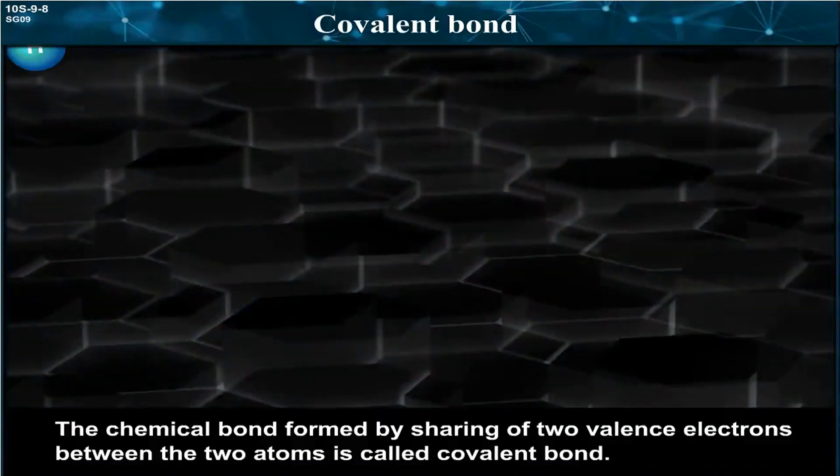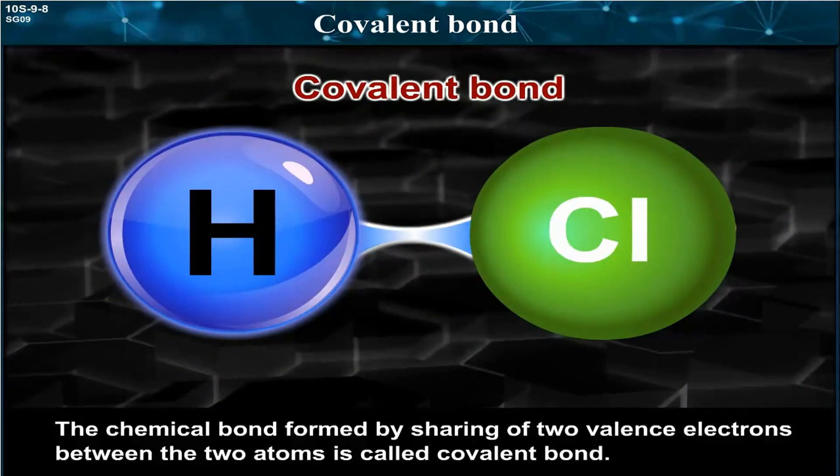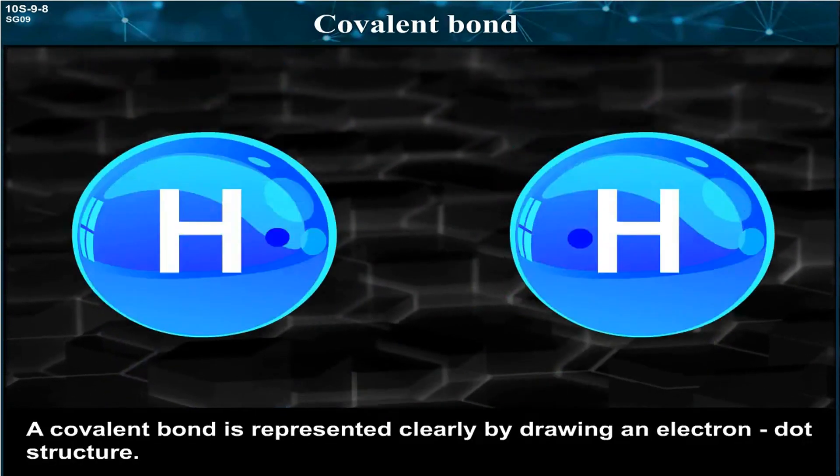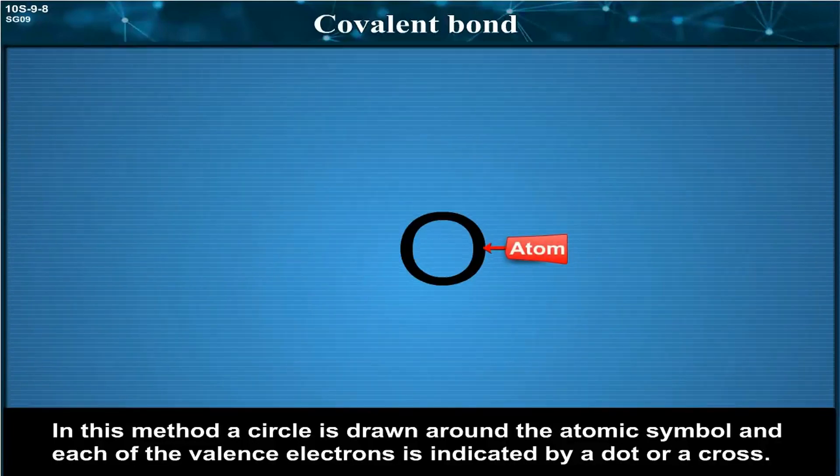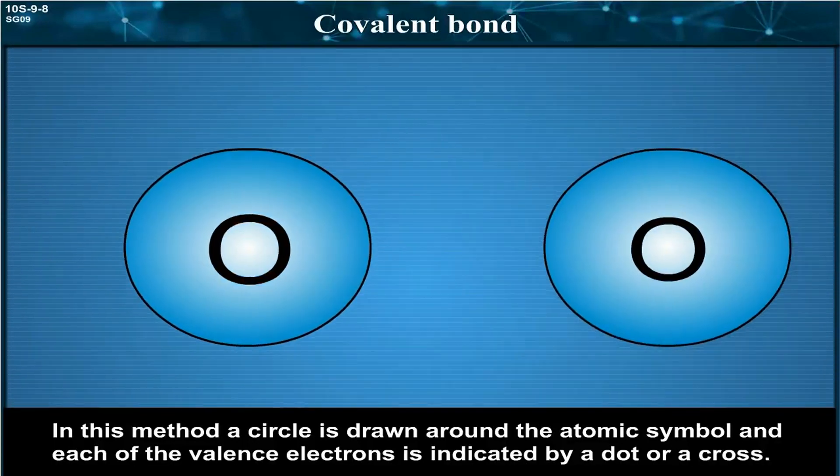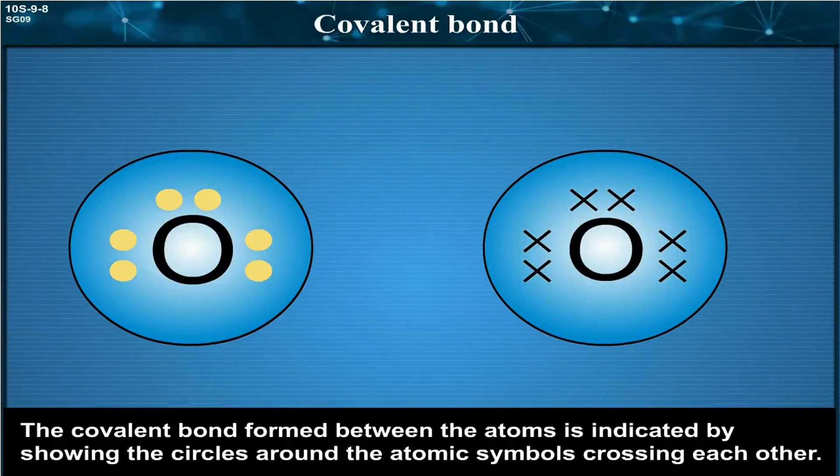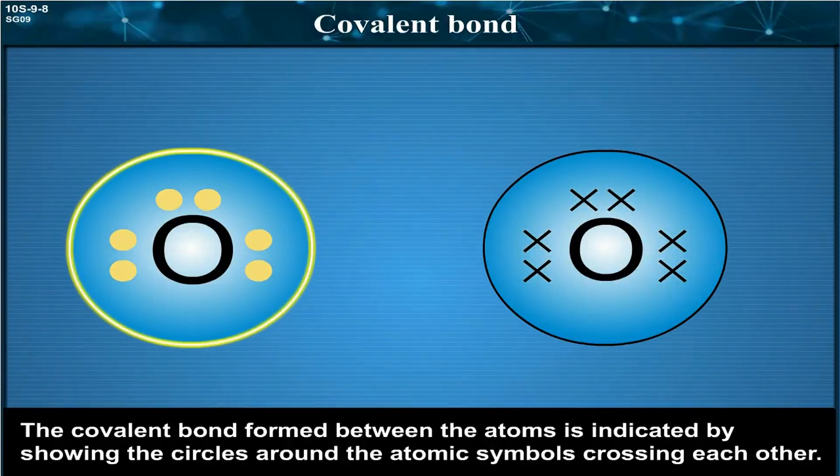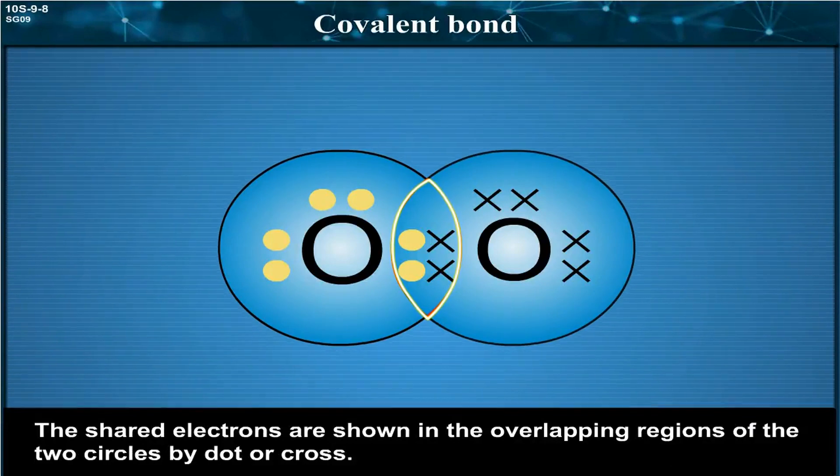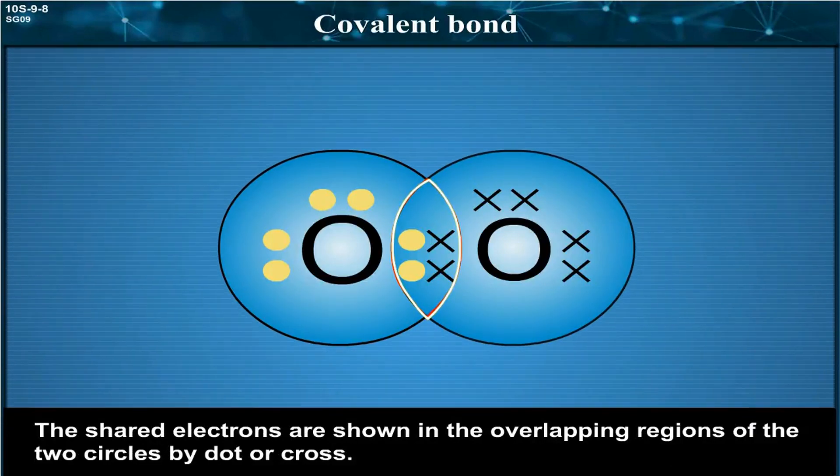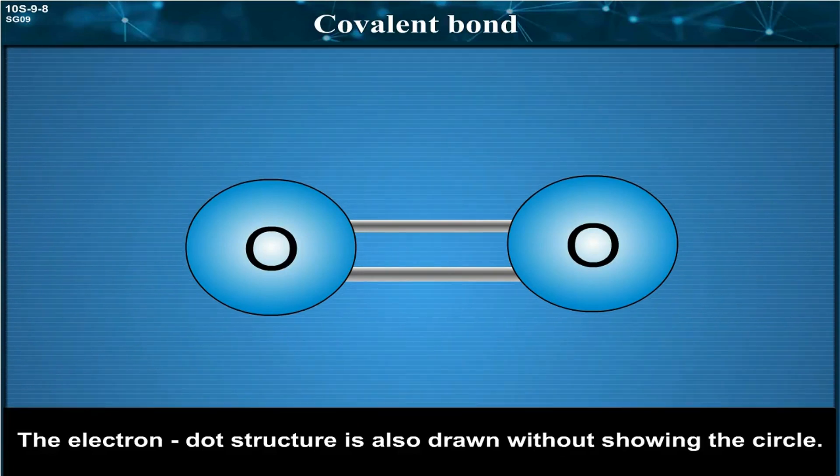Covalent Bond: The chemical bond formed by sharing of two valence electrons between the two atoms is called covalent bond. A covalent bond is represented clearly by drawing an electron dot structure. In this method, a circle is drawn around the atomic symbol and each of the valence electrons is indicated by a dot or a cross. The shared electrons are shown in the overlapping regions of the two circles. The electron dot structure is also drawn without showing the circle.